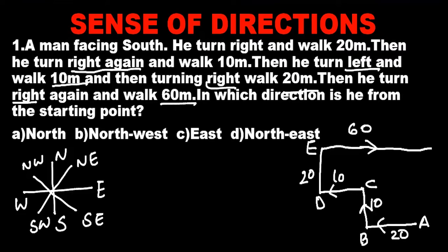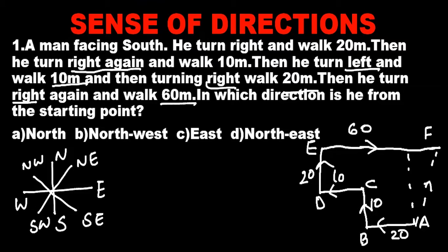The final position is F. The question is: in which direction is he from the starting point? We have to find out the direction from the starting point. Clearly, his direction from the starting point is north-east. So option D is the answer.